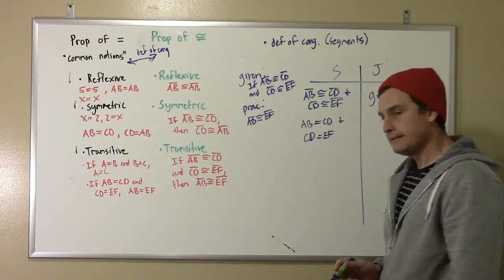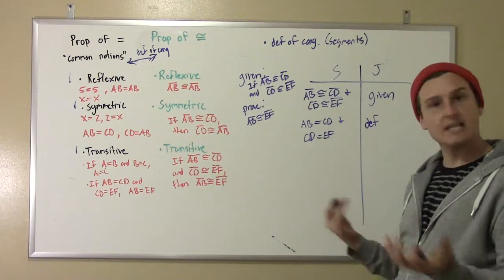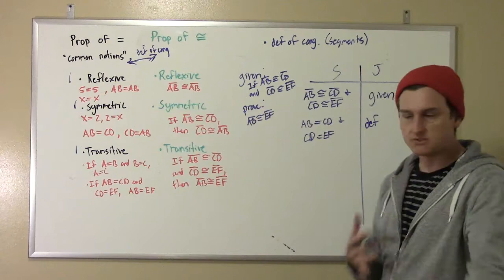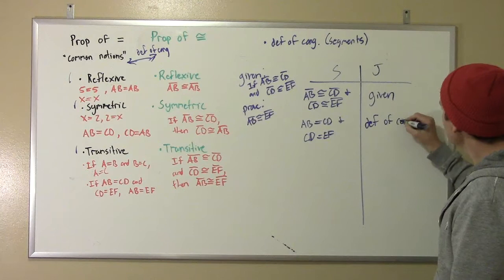In this case, we're talking about congruent segments, so you could say definition of congruent segments if you wanted to. But typically, congruence means equal in measurement, whether we're talking about angles or segments or triangles or whatever. So we're going to say definition of congruence here. Def of congruence is my abbreviation there.